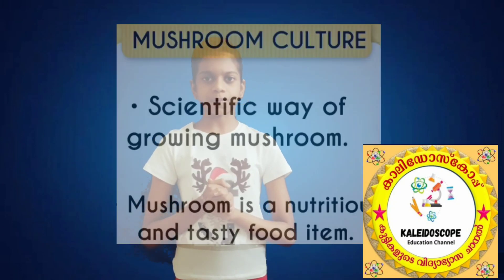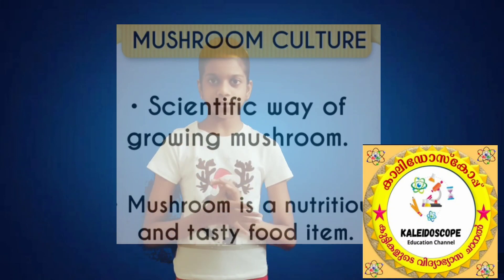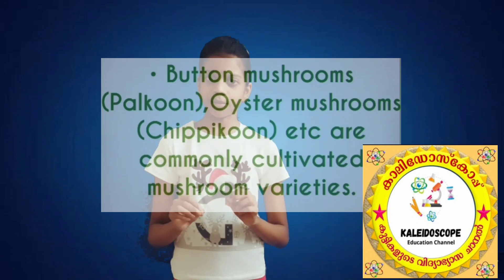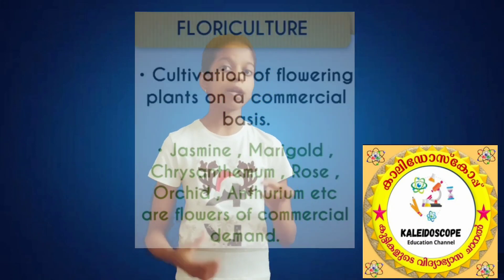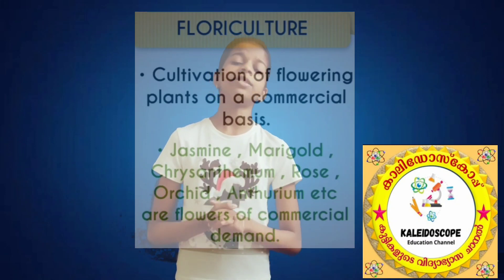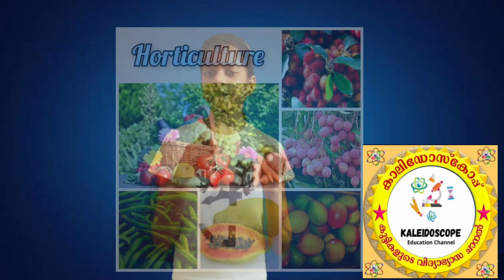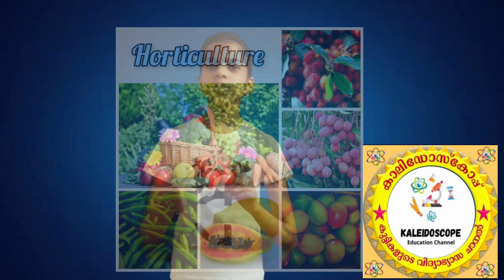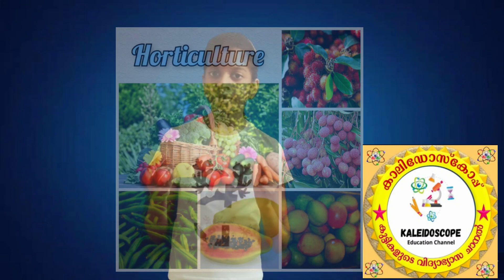Mushroom Culture products are edible mushrooms. Varieties are Button Mushroom and Oyster Mushroom. Floriculture varieties include Jasmine, Orchid, and Anthurium. Horticulture involves the production of different varieties of fruits and vegetables. Varieties include Litchi, Rambutan, and Anthurium.